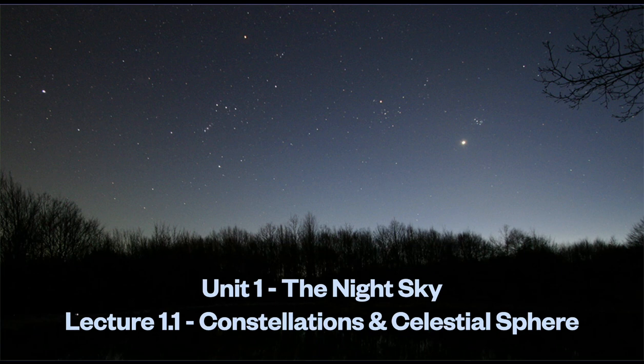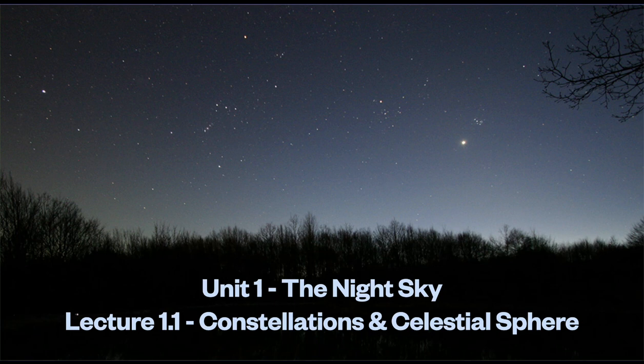The star up here is Betelgeuse, and this one down here is Rigel. The Seven Sisters, or the Pleiades, is a little star cluster also in the western sky, and this bright object is the planet Venus. In this unit we'll be talking about the early development of constellations and their modern definitions.